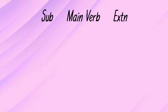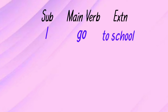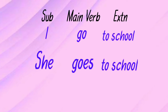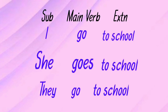Another example: I go to school — subject is 'I,' main verb is 'go,' extension is 'to school.' She goes to school — 'she' is third person singular number, so we add es to the main verb, which gives us 'goes.' They go to school — 'they' is third person plural number, so we use the singular form 'go.'